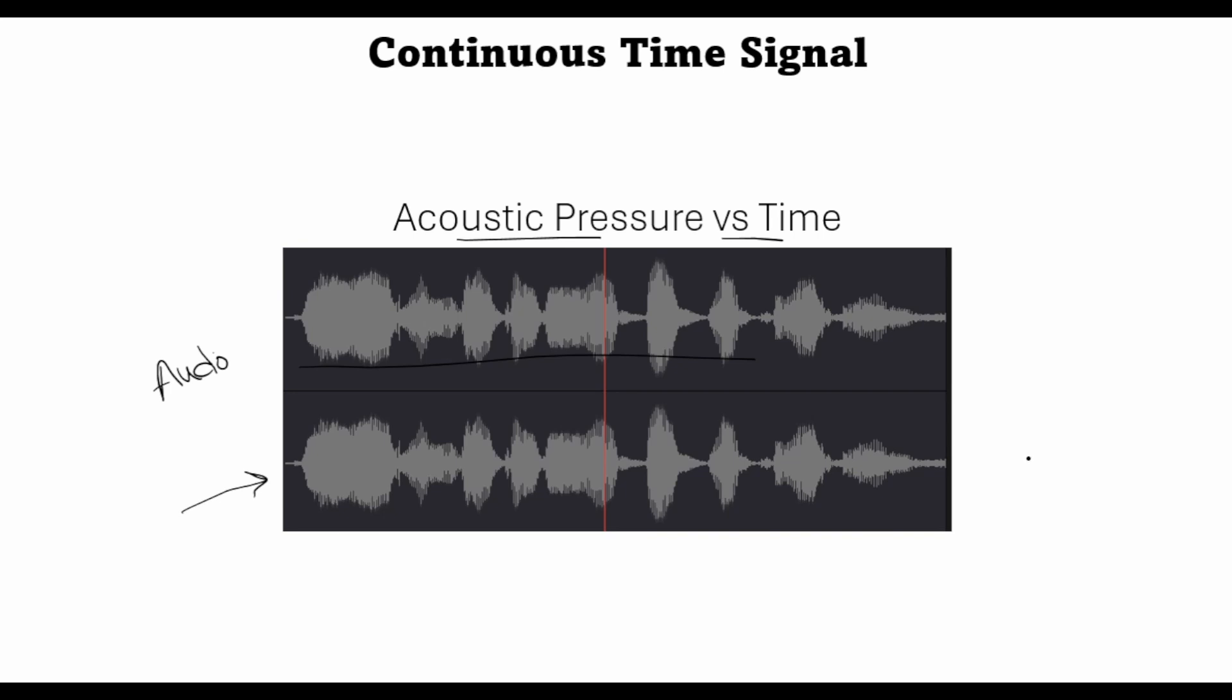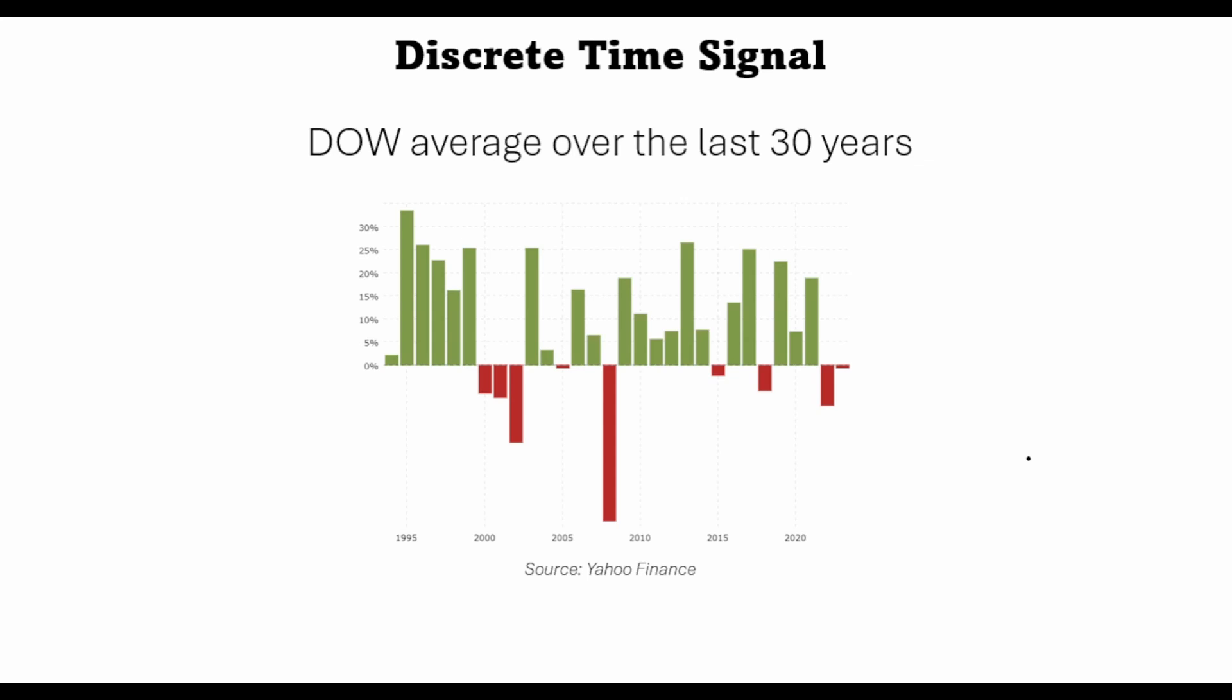Now let's look at an example of a discrete time signal. So this is a signal showing the Dow Jones average over the last 30 years, which is an indicator of the market performance. So you can see that there was the dot-com bubble in 2001, then the great crisis in 2008, then we had almost 11 years of bull run.